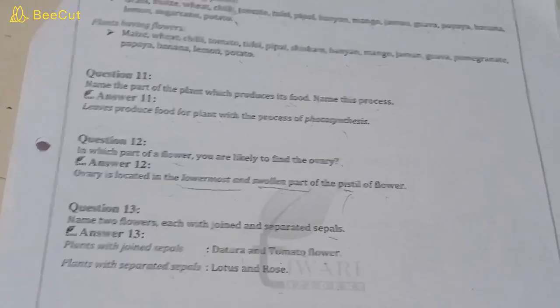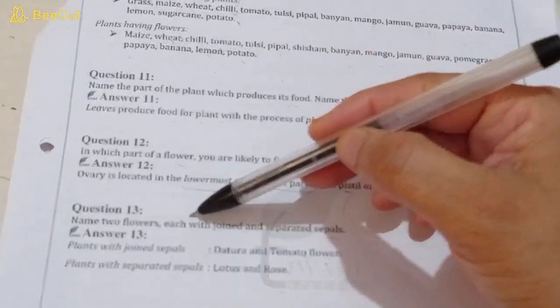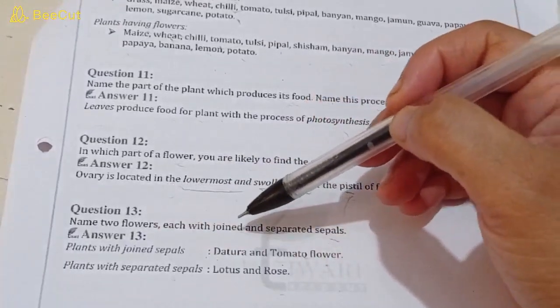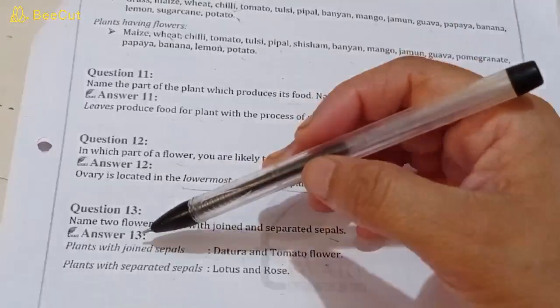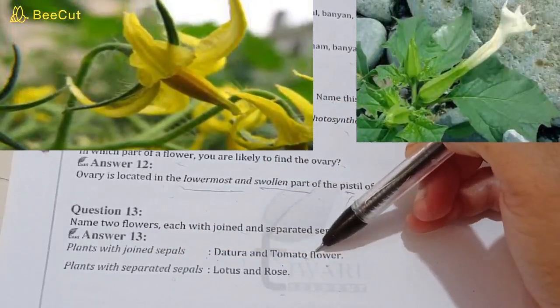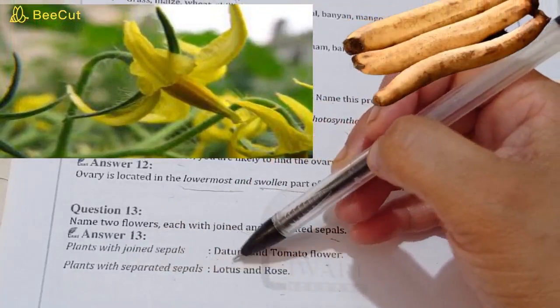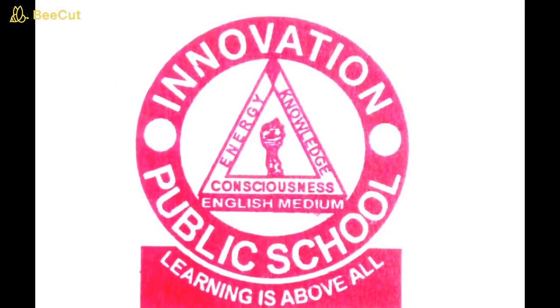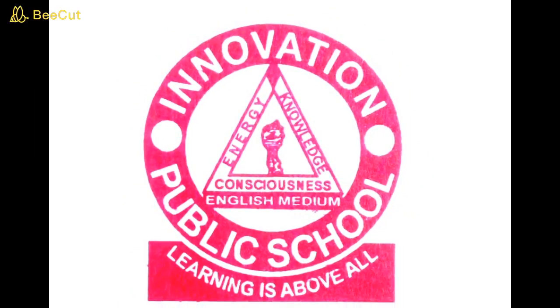Question number thirteen: name two flowers each with joined and separated sepals. Two flowers with joined sepals and two with separated sepals. Flowers with joined sepals are Datura and Dholpatia. Flowers with separated sepals are Lotus and Rose.